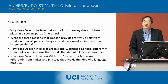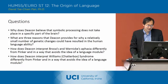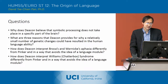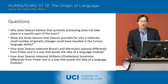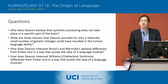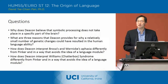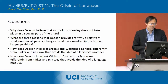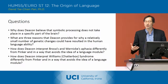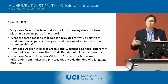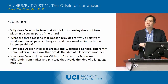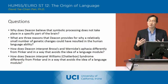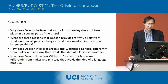So just to review quickly from last time: why does Deacon believe that symbolic processing does not take place in a specific part of the brain? It's because symbolic processing requires linkages between different symbol-to-symbol relationships, and so it requires interaction between different parts of the brain. Symbolic processing requires that the entire brain be involved in different ways — it's about relationships, about connections between different parts of the brain.